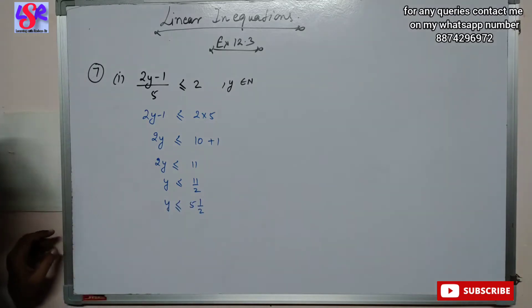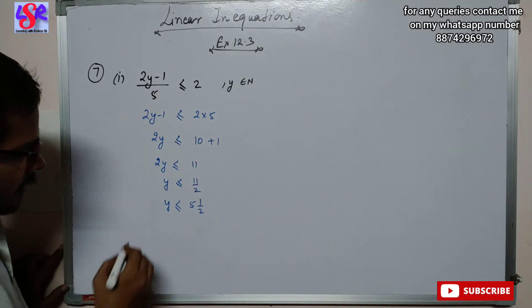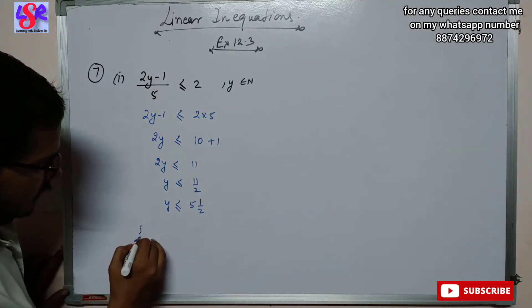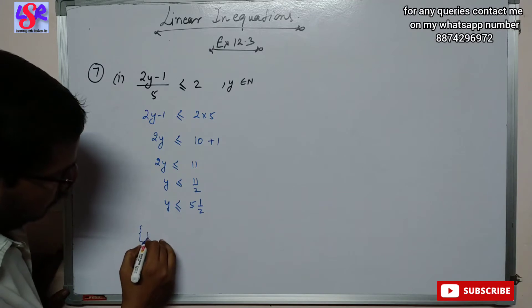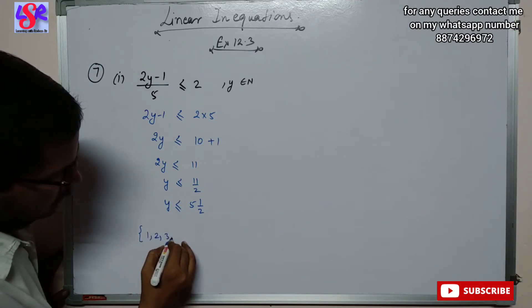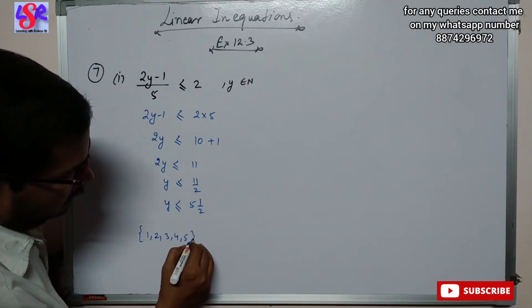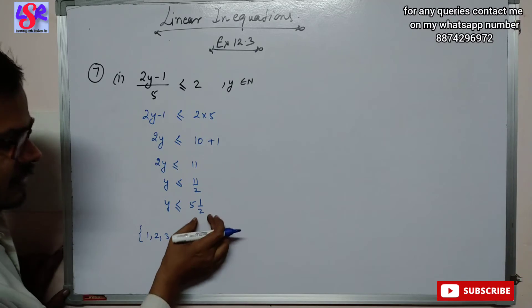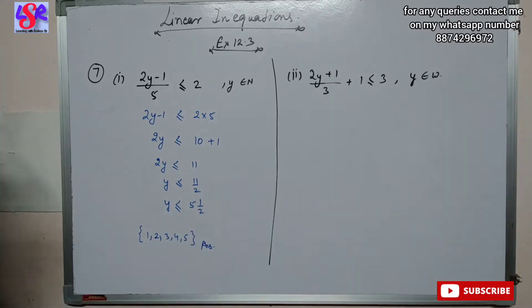Now y is the element of natural number, and natural number begins from 1. Since y is less than or equal to 5 and 1/2, we take 1, 2, 3, 4 and 5, as 5 is less than this number.